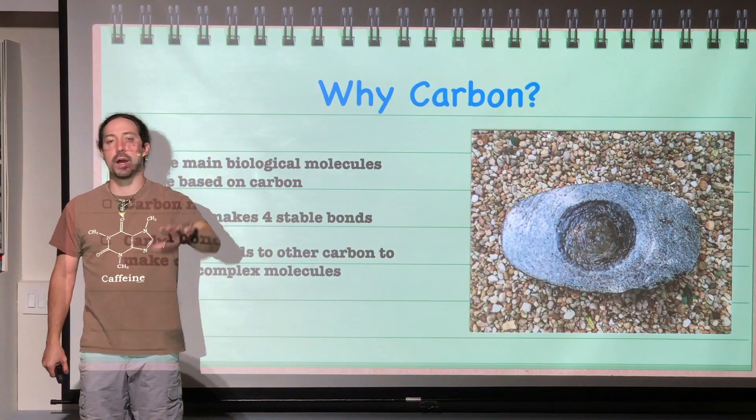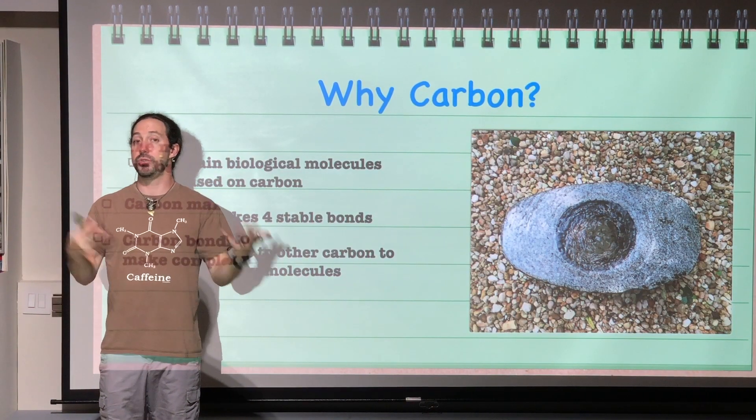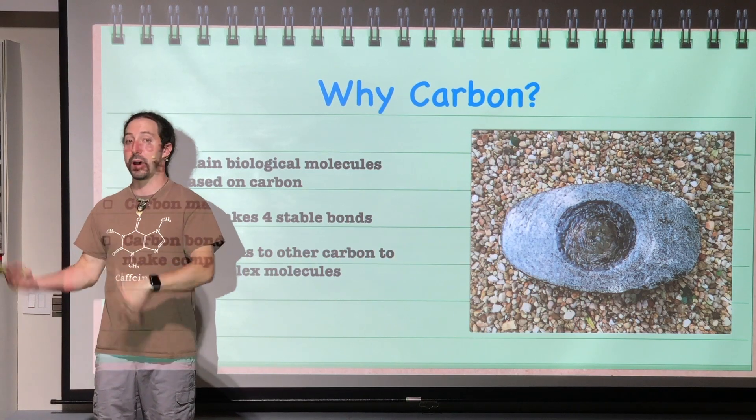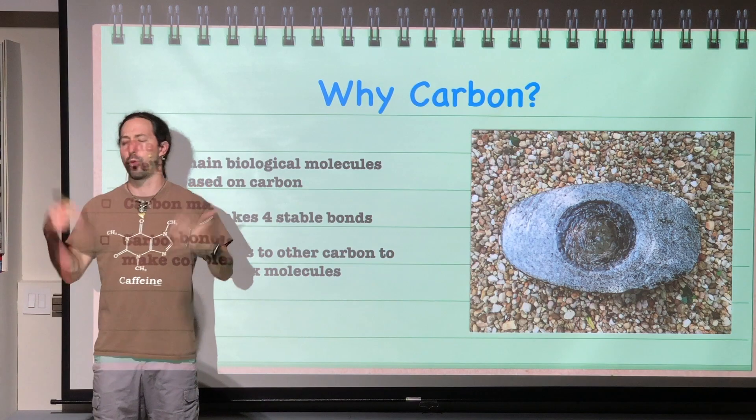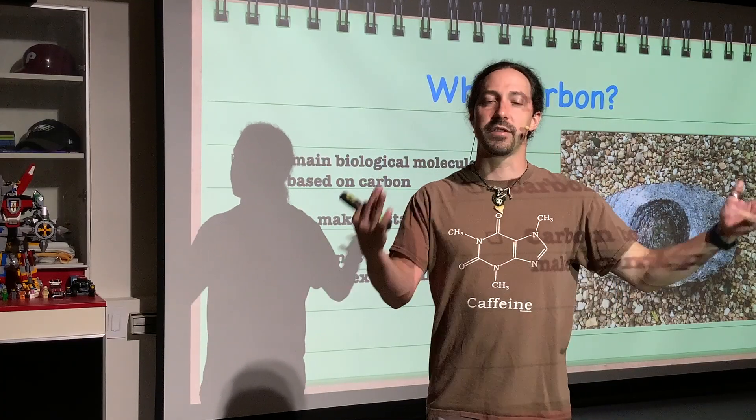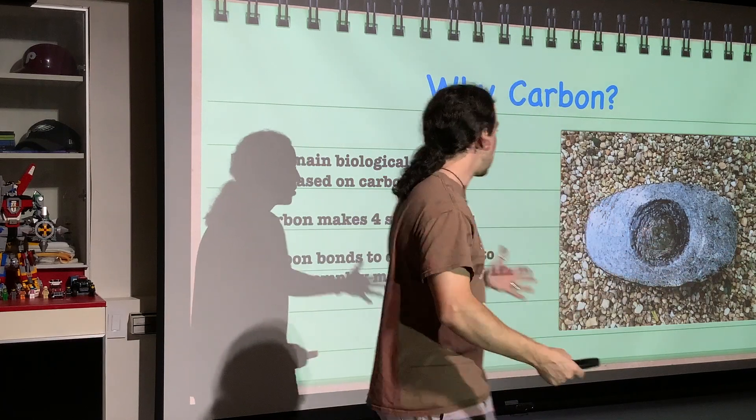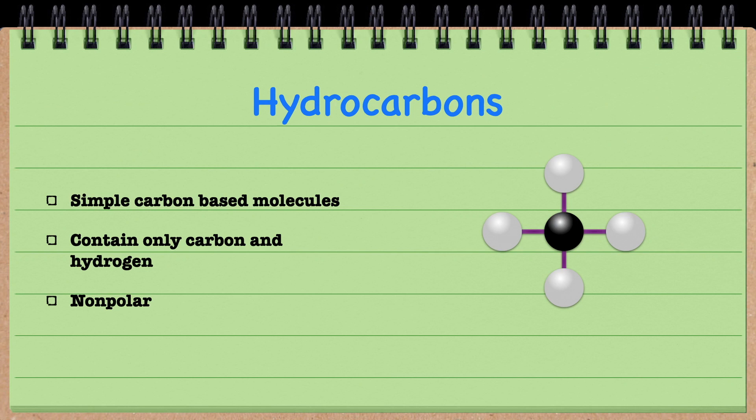Why is that? Well, here we go. First off, it makes four stable bonds. Those bonds can either be four single bonds, or one double bond and two single bonds, or two double bonds, or one single bond and one triple bond. The key is it makes four bonds, and carbon likes to bond to other atoms of carbon, thus allowing it to make some really complex structures.